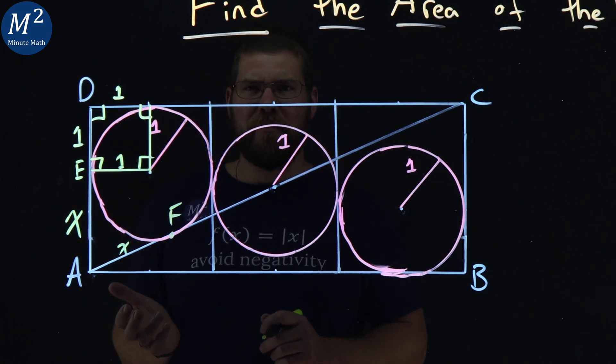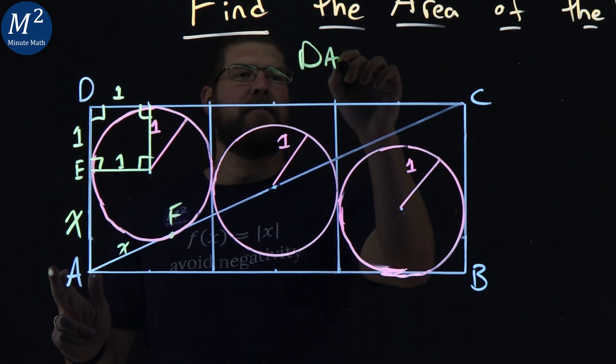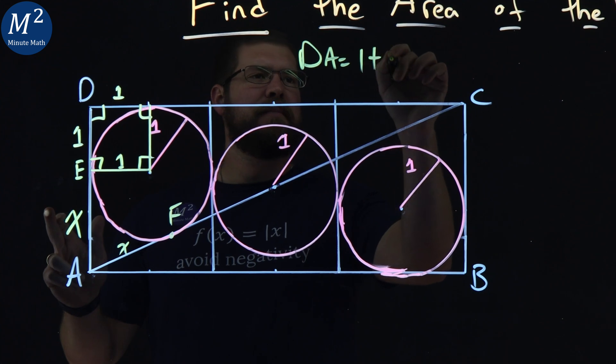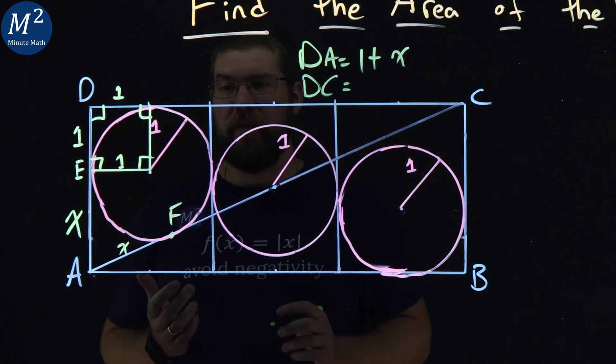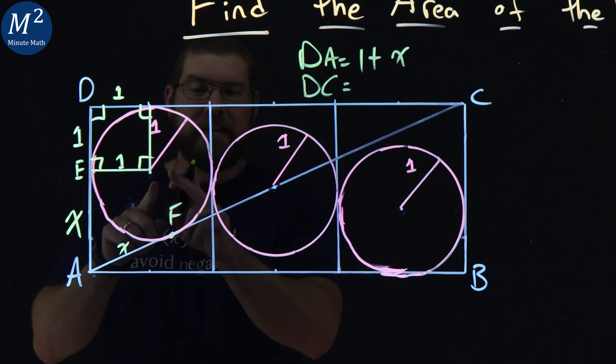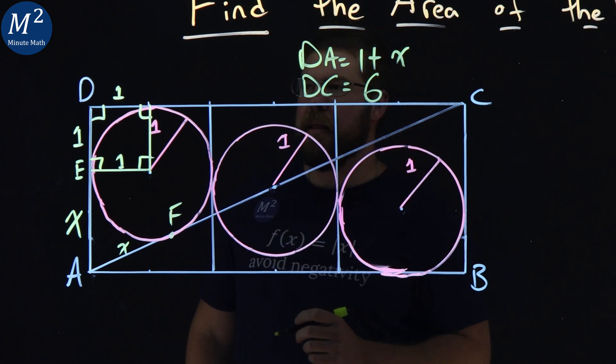Well, how does that help us? We have one side length, DA, has a length of 1 plus X. And DC, if the radius is 1, diameter is 2, 2, 4, 6 across the board, we have 6 right there.